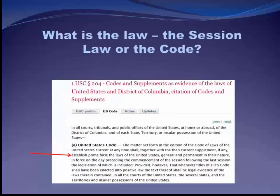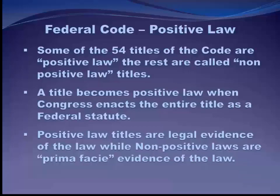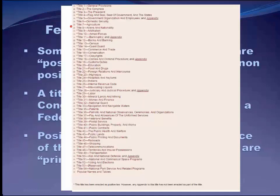Is the law the session law or the code? The code only establishes prima facie evidence of the laws of the United States, except for titles that have been enacted into positive law — those titles are legal evidence of the law. If there's a conflict between a non-positive law title of the US Code and the text in the Statutes at Large, the Statutes at Large will prevail. To see which titles have been enacted into positive law, go to the Office of Law Revision Counsel website — those titles have an asterisk next to them.